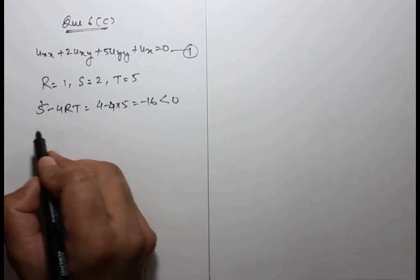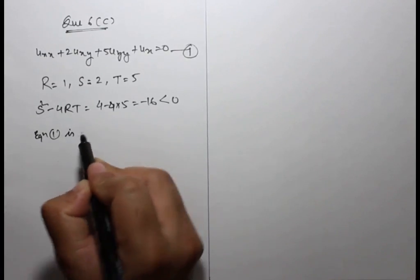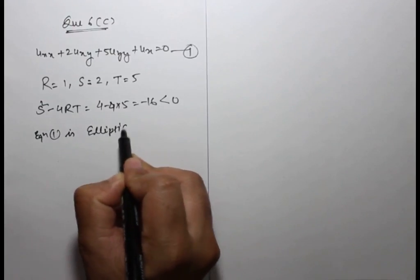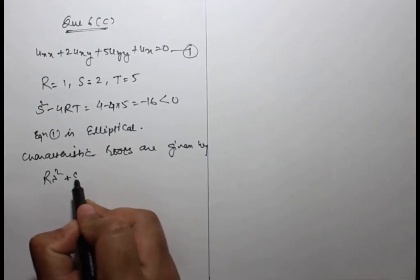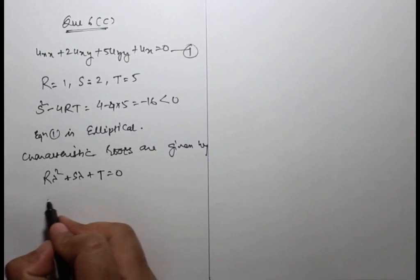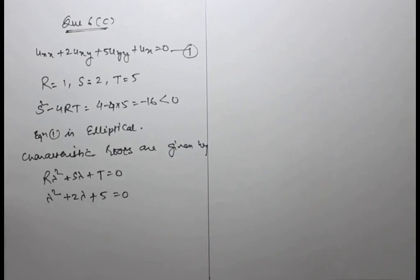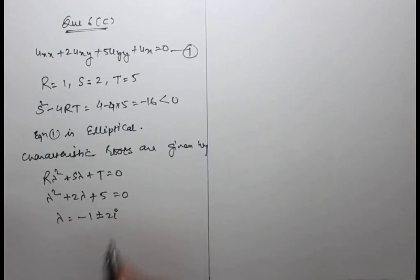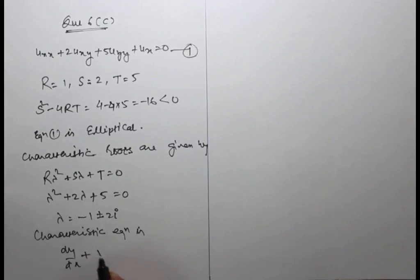Comparing with the standard form, R equals 1, S equals 2, T equals 5. Then S² minus 4RT equals 4 minus 20 equals minus 16, which is negative. This means equation 1 is elliptic.